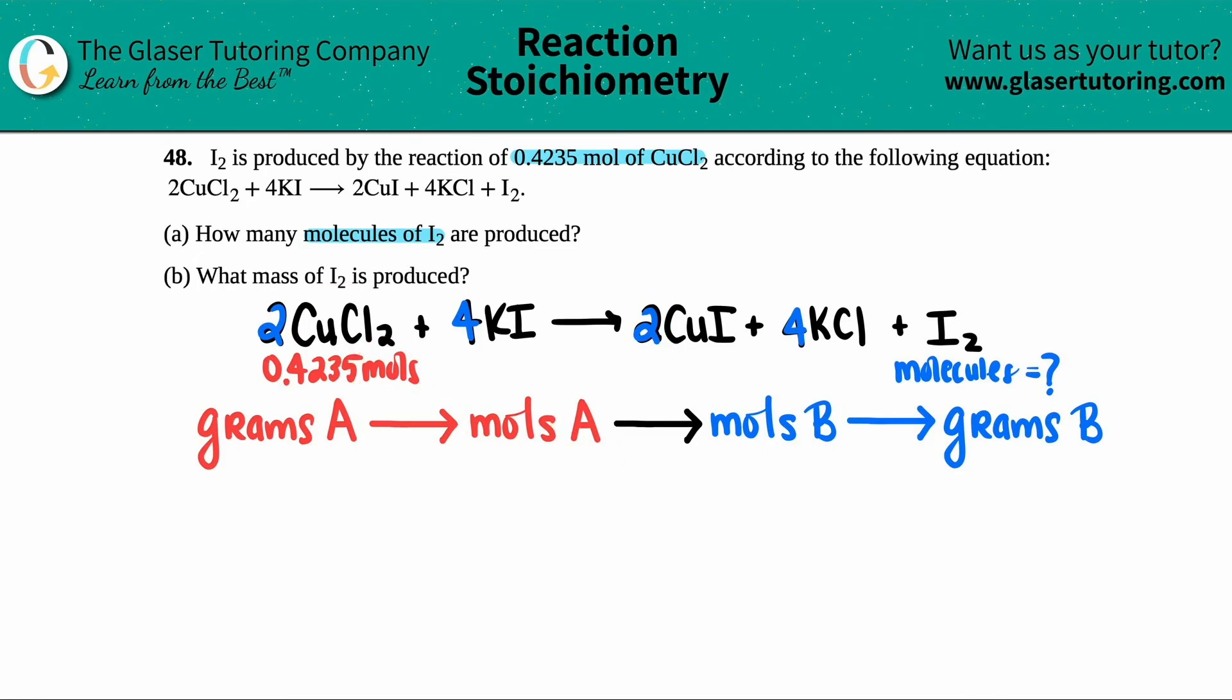A just represents that compound. So I don't even need grams. So bye bye. I'm going to start at the moles. So I have 0.4235 moles of now specifically, and maybe I'll just pull this out a little bit, specifically CuCl₂.